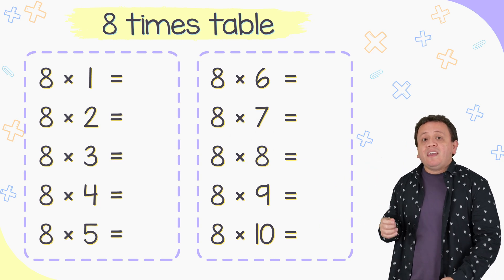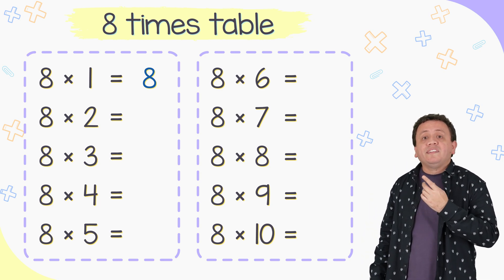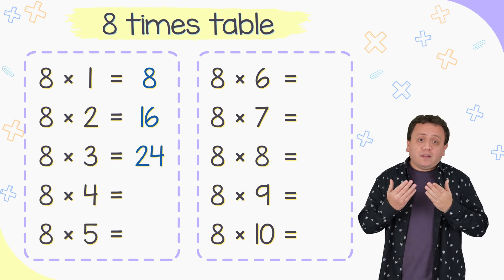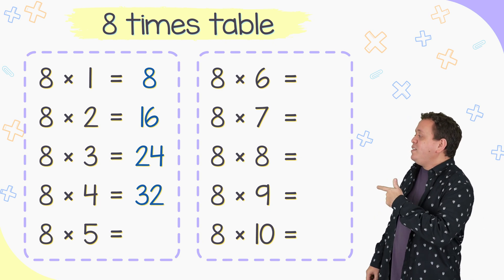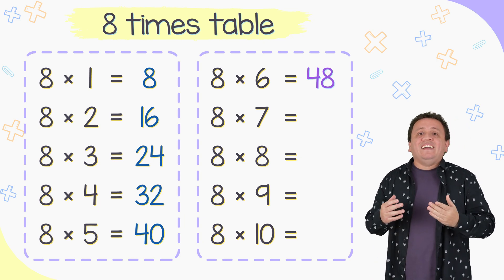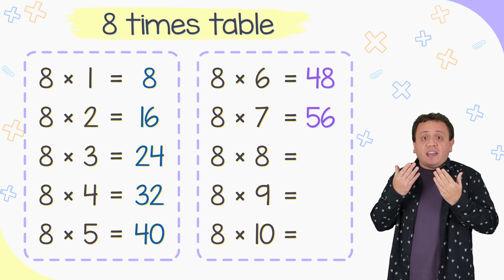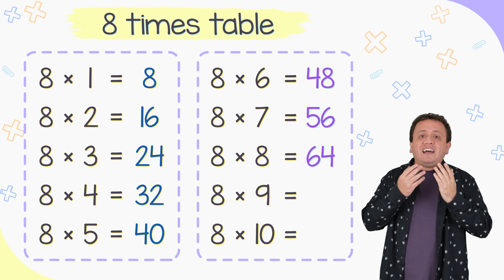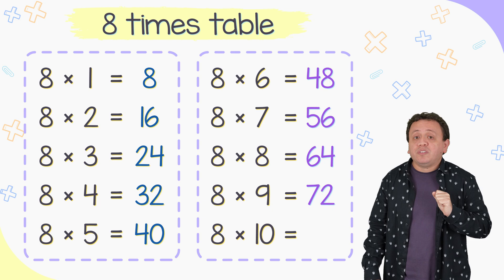And now the 8 times table. 8 times 1 equals 8. 8 times 2 equals 16. 8 times 3 equals 24. And 8 times 4 equals 32. 8 times 5 equals 40. 8 times 6 equals 48. 8 times 7 equals 56. 8 times 8 equals 64. 8 times 9 equals 72. And 8 times 10 is equal to 80.